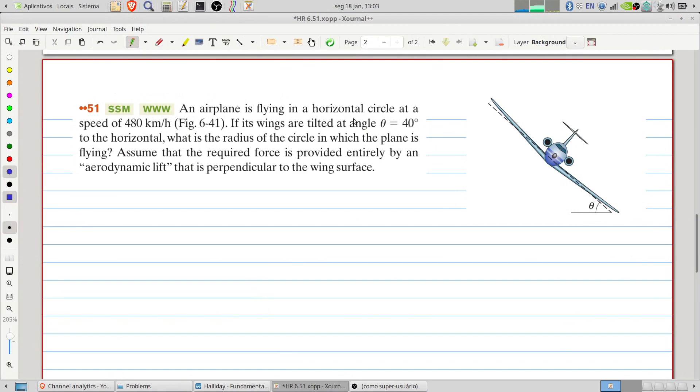An airplane is flying in a horizontal circle at a speed of 408 kilometers per hour. If its wings are tilted at angle 40 degrees to the horizontal, what is the radius of the circle in which the plane is flying? Assume that the required force is provided entirely by an aerodynamic lift that is perpendicular to the wing surface.